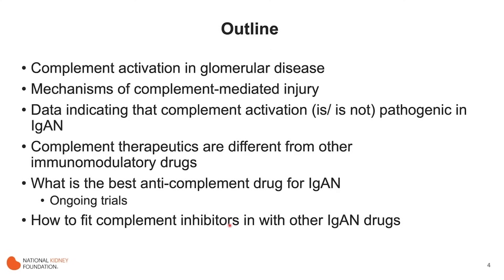In the outline of what I'll discuss: first, review the complement system and how it is activated in glomerular disease; the downstream mechanisms of complement mediated injury; data indicating whether complement activation is pathogenic in IgA nephropathy; a review of complement therapeutics and how they differ from other immunomodulatory drugs; what is the best anti-complement drug for IgA nephropathy; ongoing trials; and finally how to fit complement inhibitors into treatment regimens incorporating other drugs currently used for IgA nephropathy.